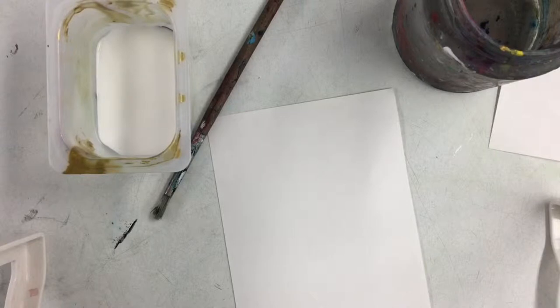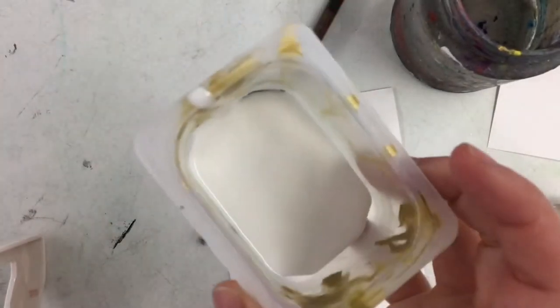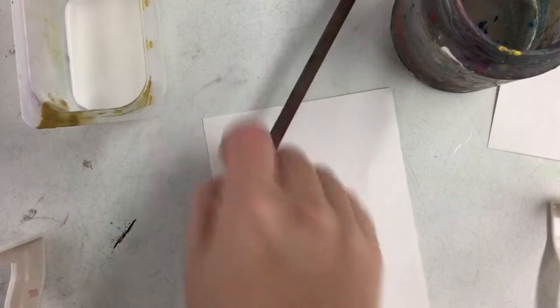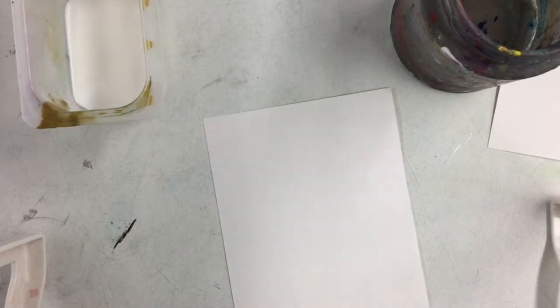So this is Mod Podge. It's not Elmer's glue. This is a special kind of glue that's really good for using for collage. The reason it's in this big tub is so that way you can pour a small amount that you need and it's easier to brush onto your work.